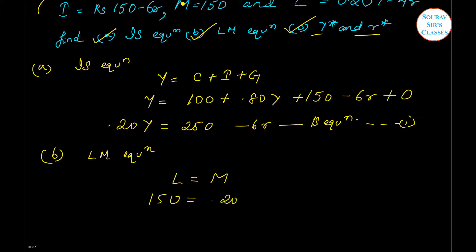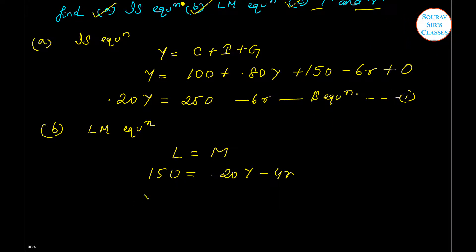0.20Y minus 4r. And this can be rewritten as Y equals 750 minus 20r. Okay, and let me mark this as equation two.